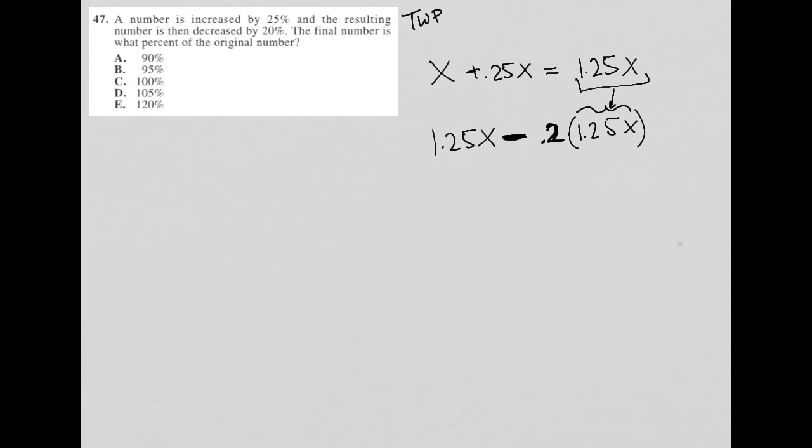The final number is what percent of the original number? Well, let's see. What is the final number? So I have 1.25X minus - now what is 0.2 times 1.25X? I'm going to go to my calculator.